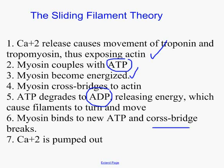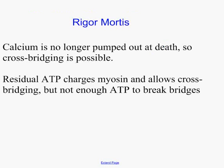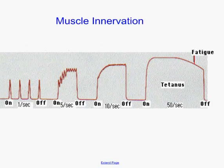Myosin likes to bond to actin. The way it bonds is it first acquires an ATP, so it has some energy — it becomes energized. When it gets energized, it wants to form bridges, form bonds with the actin. So the thick and thin filaments join together. The minute myosin bonds to actin, an explosion takes place: the ATP degrades to ADP, releasing energy. That energy causes the whole filament to move forward — almost like a ratchet. The filament moves forward, then myosin looks for another ATP, forms another cross bridge, and does it again and again.